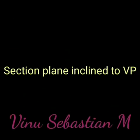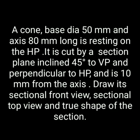Section Plane Inclined to VP. A cone with base diameter 50mm and axis 80mm long is resting on the HP. It is cut by a section plane inclined 45 degrees to VP and perpendicular to HP, at a distance of 10mm from the axis. Draw its sectional front view, sectional top view, and true shape of the section.